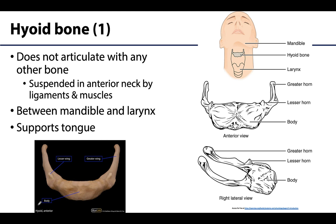The hyoid bone is unique in the fact that it does not directly articulate with any other bone. It's going to be suspended from the styloid process by ligaments and muscles. There will be other muscles in the anterior neck and underneath the chin area that attach to the hyoid bone, but certainly not a very direct articulation. So oftentimes you'll hear the hyoid bone referred to as free floating. If you are palpating your anterior neck, you'll first feel your laryngeal prominence, and moving superiorly you can feel the hyoid, though it's more difficult to palpate than the larynx.